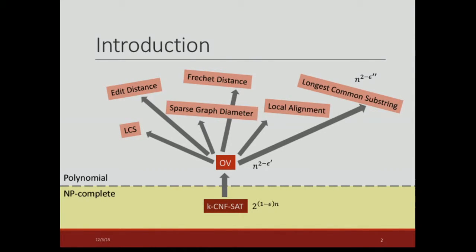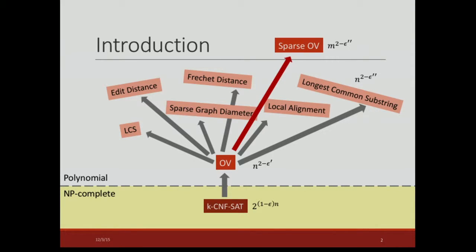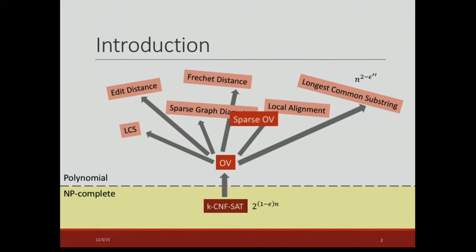Our motivation is that k-SAT is a complete problem in the NP world, and in the polynomial world we want to find completeness of problems. We showed that there is a sparse case of the orthogonal vectors problem, that OV is a special case of this problem, and we can show that all the gray arrows still hold true if we replace sparse orthogonal vectors here.